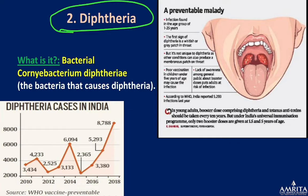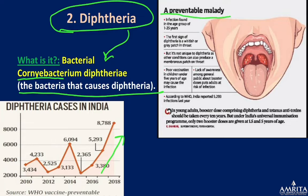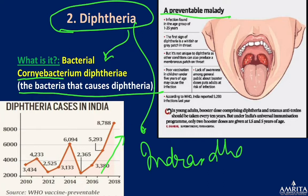Diphtheria is a disease caused by the bacterium Corynebacterium diphtheriae. In India, diphtheria cases are rising again — it's a preventable malady covered under the Mission Indradhanush vaccination program, which is why it's relevant.